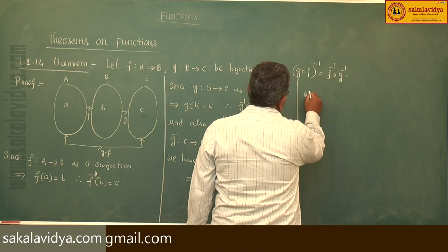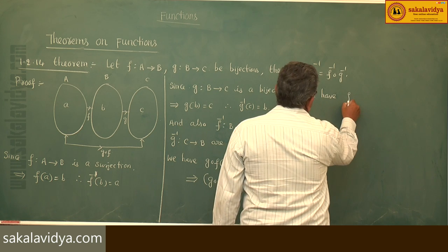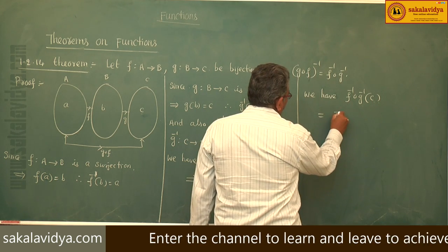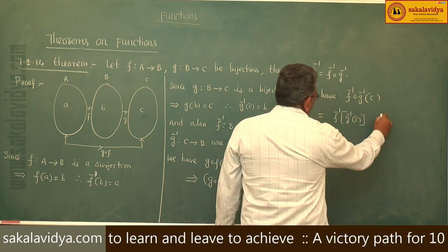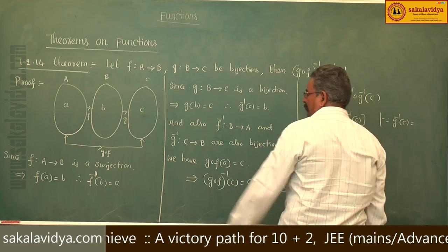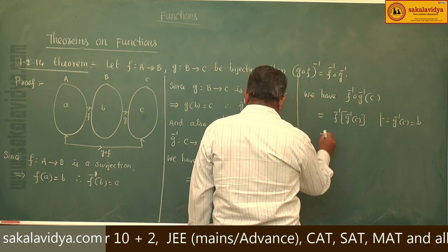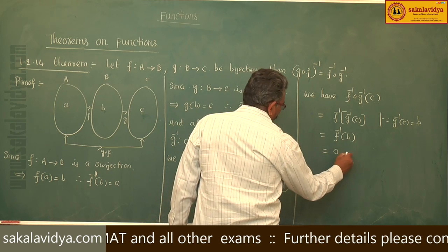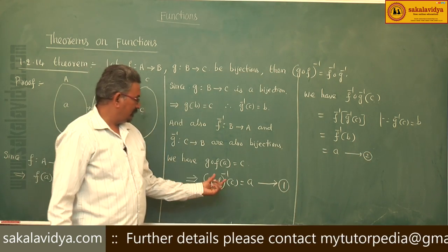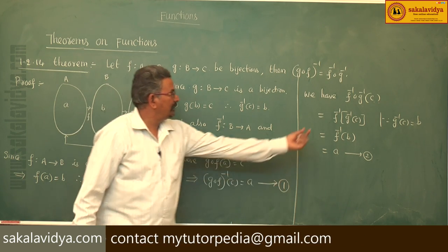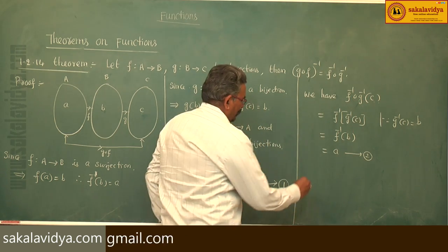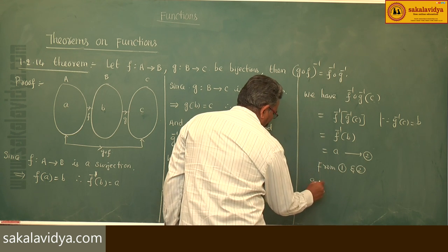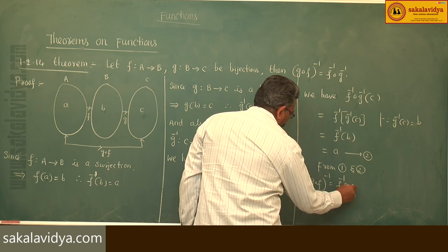We have f⁻¹∘g⁻¹(c). This we can write as f⁻¹(g⁻¹(c)). Since g⁻¹(c) = b, this is f⁻¹(b). And f⁻¹(b) = a — this is Equation 2. So (g∘f)⁻¹(c) = a and f⁻¹∘g⁻¹(c) = a. From Equations 1 and 2, (g∘f)⁻¹ = f⁻¹∘g⁻¹.